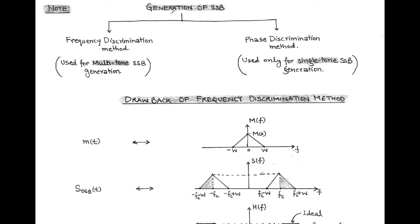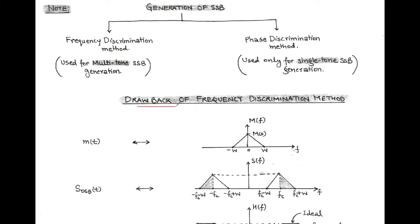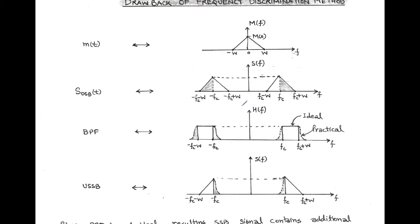We have discussed two methods for the generation of single sideband: the frequency discrimination method (filter method) and the phase discrimination method. There is a key difference between them. The frequency discrimination method is used for multi-tone SSB generation, meaning we can use more than one modulating signal having multiple frequencies. But the phase discrimination method is used only for single-tone SSB generation. However, the filter method has a drawback, which we will discuss graphically.